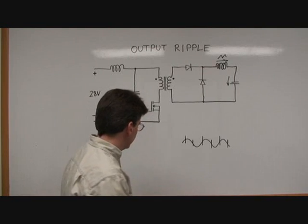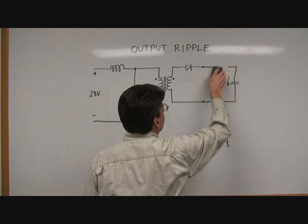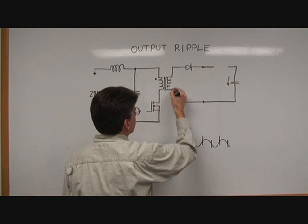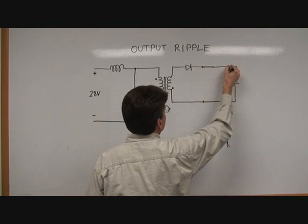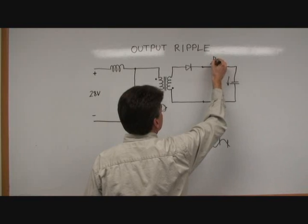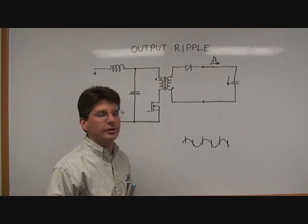Separately we also use a flyback topology. Flyback topology is slightly different in that it creates a pulsating current, something like this, which also flows in the output capacitor and creates voltage ripple on that capacitor.